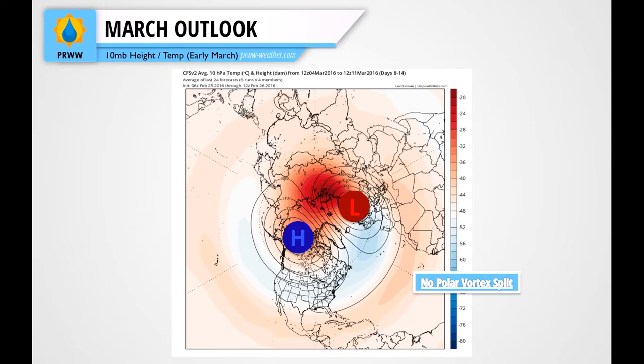This is the 10 millibar heights and temperatures for early March. We've marked the highs and low pressures on this map, and the red area next to that low pressure is where we're going to have a stratospheric warming event. Usually this helps bring colder air into the northeast, which is one of the reasons why we're likely going to see a colder early March.